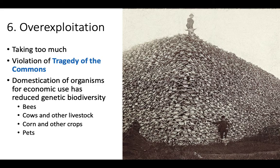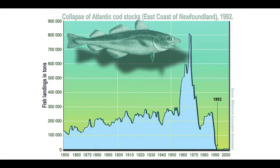And overexploitation, which is basically a violation of the tragedy of the commons. Here's a picture of settlers in the western United States in the 1800s with all the buffalo skulls they've killed — that's why buffalo are in danger today. Taking more than we need, whether it's fish or buffalo, and even the domestication of animals for economic use reduces genetic biodiversity, whether it's cows and livestock, corn and crops, honeybees, or even pets. By breeding them for certain traits, we're reducing genetic biodiversity. The cod stocks in New England are another example: cod fishing rose steadily, then spiked massively, the population crashed, they tried fishing again, it crashed again — and cod is very rare around New England today.